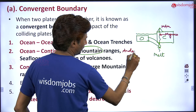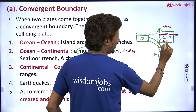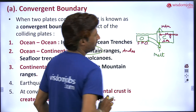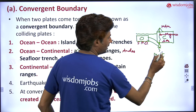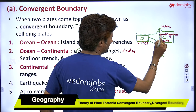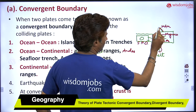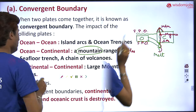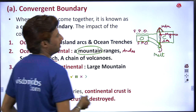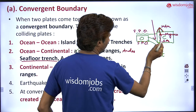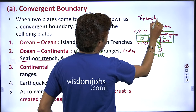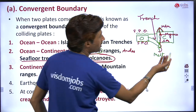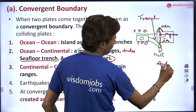Andes mountain — here it is South America and here it is the Pacific Ocean, the Southern Pacific Ocean plate and the continental plate. It is subducting, the material is melting, and then it is coming up, forming a mountain. Here it is the Pacific Ocean, the Southern Pacific Ocean. It can also produce sea floor trenches or a chain of volcanoes — again, the same example: Andes mountain, a chain of volcanoes.